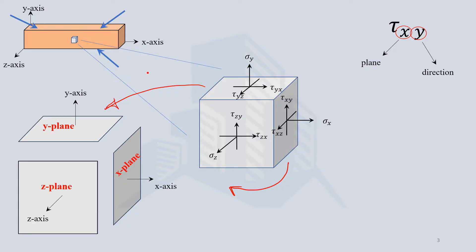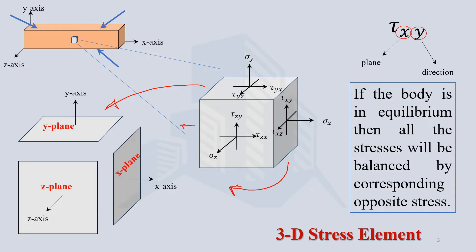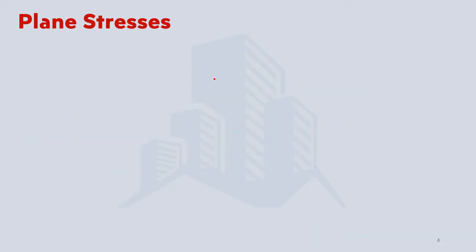If the body is in equilibrium, all these stresses will be balanced by corresponding opposite stresses. The normal stresses are balanced by normal stresses in the opposite direction, and similarly the shear stresses are balanced by opposite shear stresses. This is a full 3D stress element.